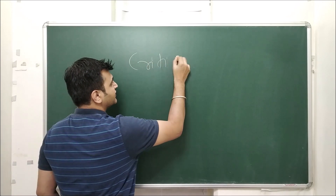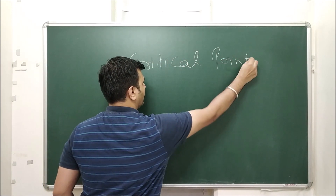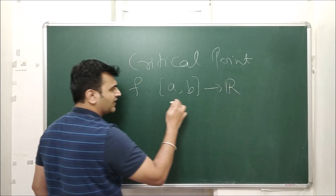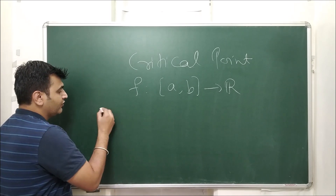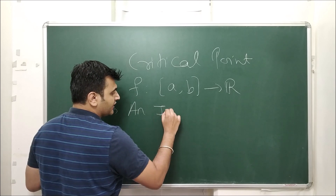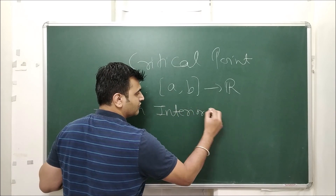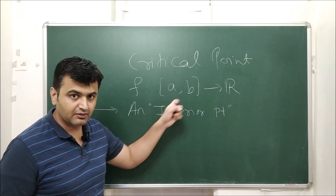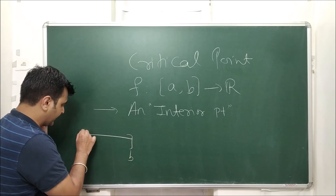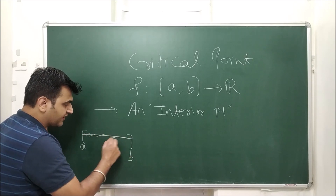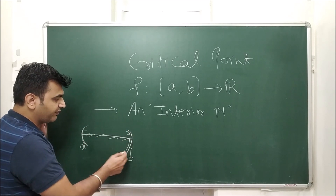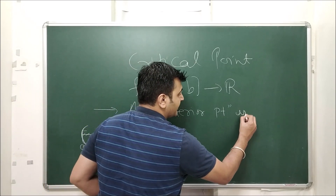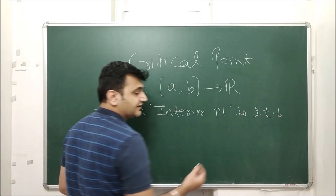Suppose you have a function from a closed interval [a, b] to the real numbers, or any interval I. We define an interior point — and the first thing to keep in mind is that it must be an interior point. For the interval [a, b], the points a and B are the boundary points, and all other points are interior points, forming the open interval (a, b).